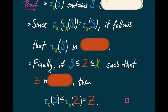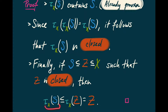The closure of S contains S — we already proved that. We also discovered that the closure of the closure is just the closure again, so the closure is in fact closed. Finally, if S is a subset of some closed set Z sitting inside X, I can close up S and close up Z, and this containment is preserved because closure is an inclusion-preserving operation. But the closure of Z is exactly Z again, so I see that the closure of S is contained in Z.